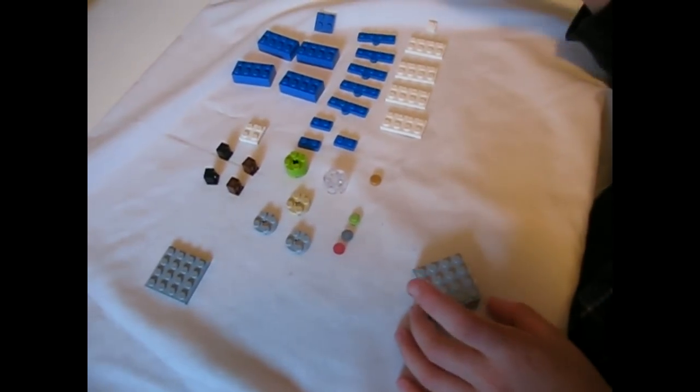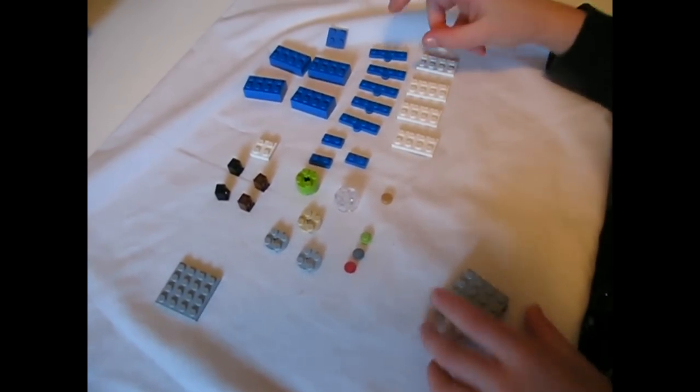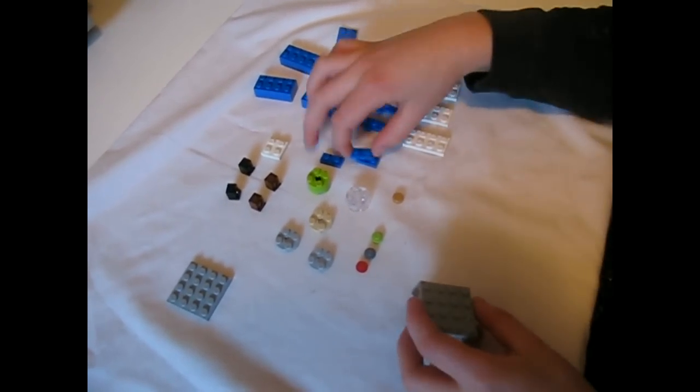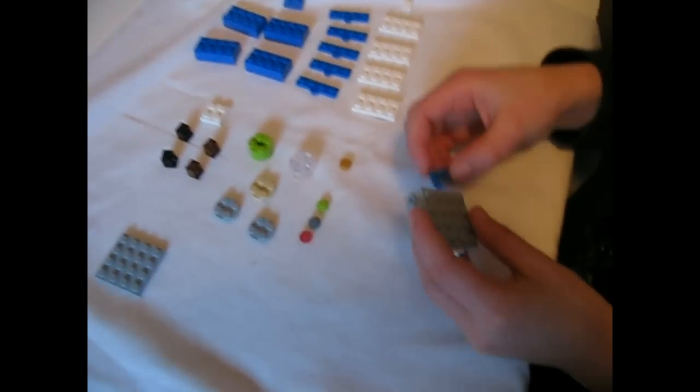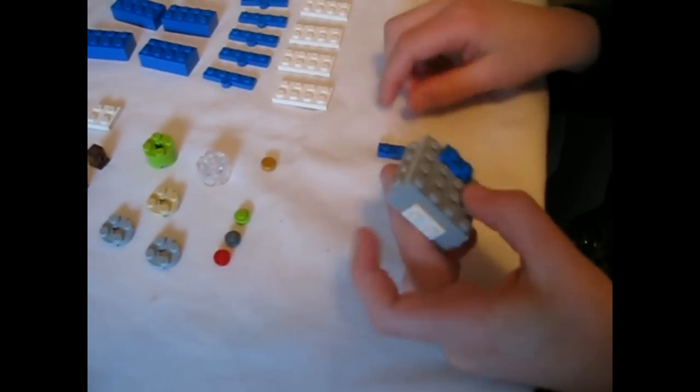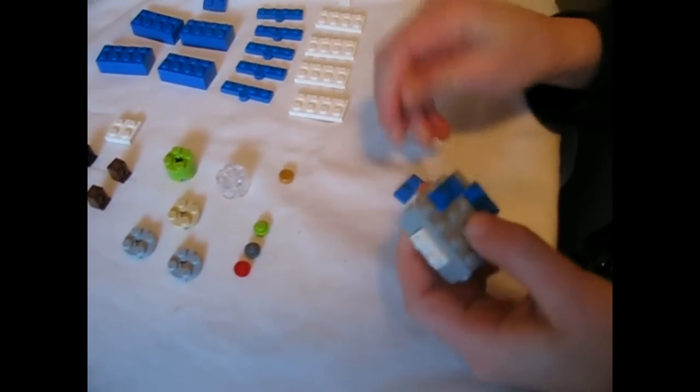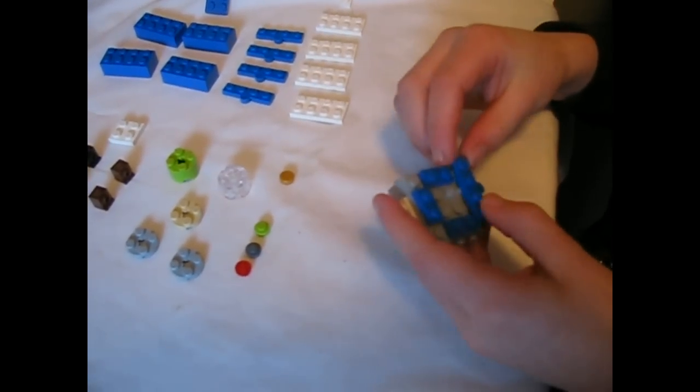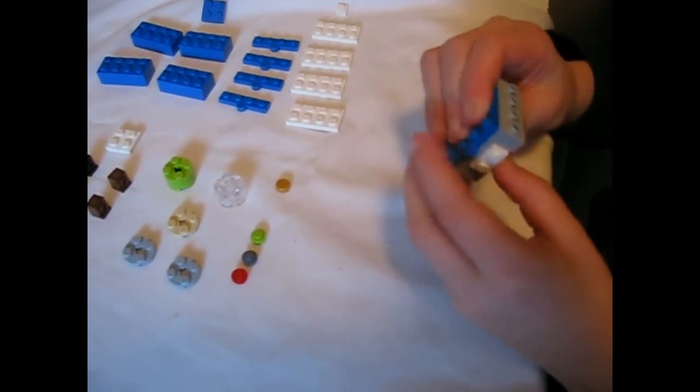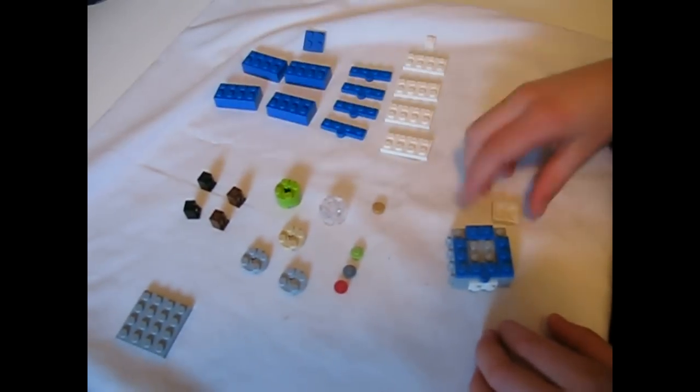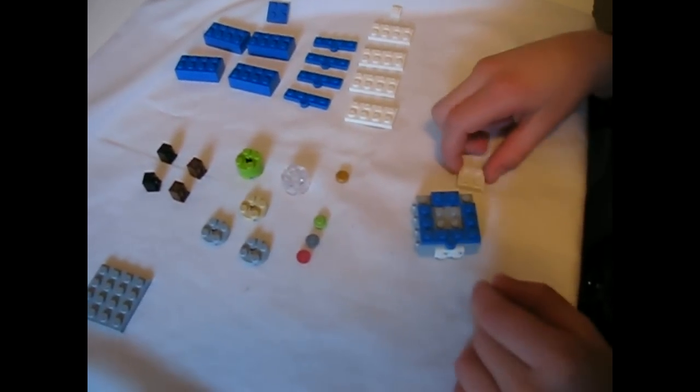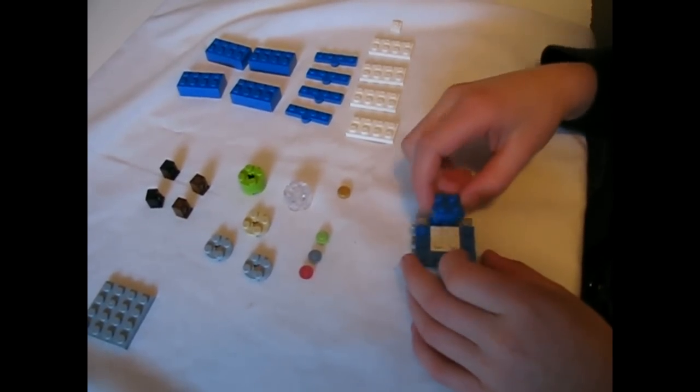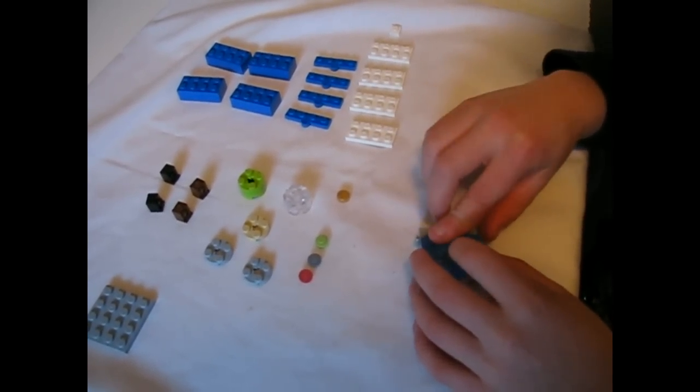And you get three of these blue things. Stick one right there, one right here, and one right there. Then you get one of these, stick it right there. Then you get this white square with studs, stick it right in the middle. And you get the same one but blue and put it right on top.